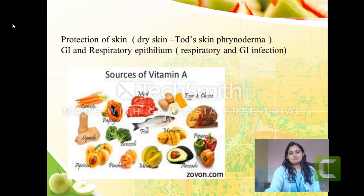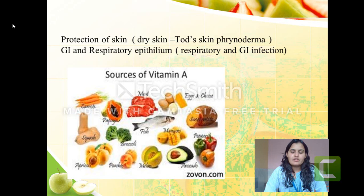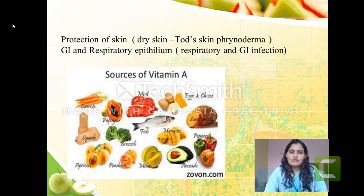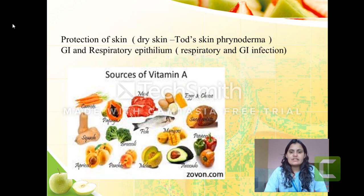Another function of vitamin A is protection of the skin and other tissues such as gastrointestinal and respiratory epithelium. If there is a deficiency, it will lead to dryness of the skin. Mainly in HIV/AIDS patients, a condition called toad skin is seen — meaning excessive scaling or dryness of the skin. Deficiency also leads to frequent and recurrent respiratory and GI infections.